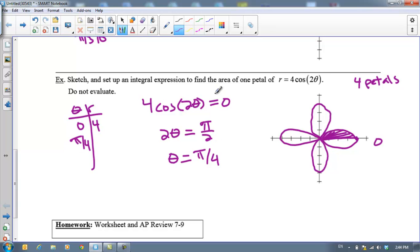Let's just verify. Let's plug π/4 in for theta. 2 times π/4 is π/2. Cosine of π/2 is 0. So can you believe that that angle right there, that radial line, is about 45 degrees? I can.